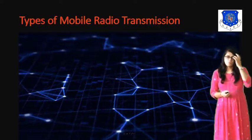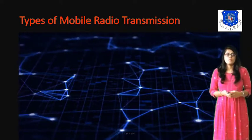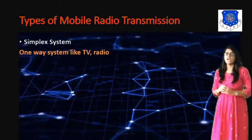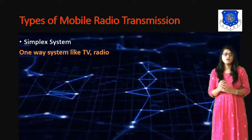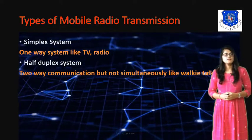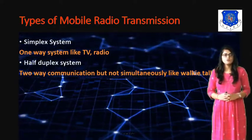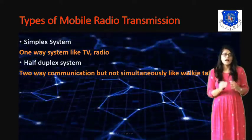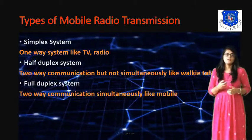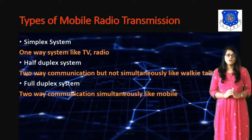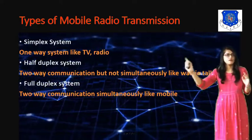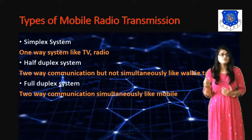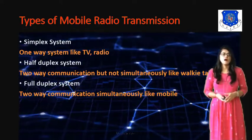Next are the types of mobile radio transmission systems for wireless communication. First is the simplex system, which is a one-way system — like radio or TV broadcasting. Next is the half-duplex system, which allows two-way communication but not simultaneously — like a walkie-talkie. Next is the full-duplex communication system, where two-way communication is possible simultaneously — from transmitter to receiver and receiver to transmitter — like a cellular phone.